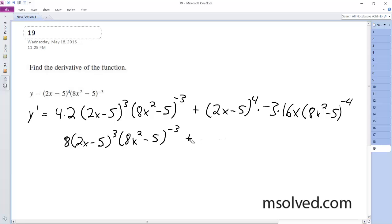actually it's going to be minus, minus 48x, 2x minus 5 raised to the 4th, 8x squared minus 5 raised to the negative 4. And I think that's everything.